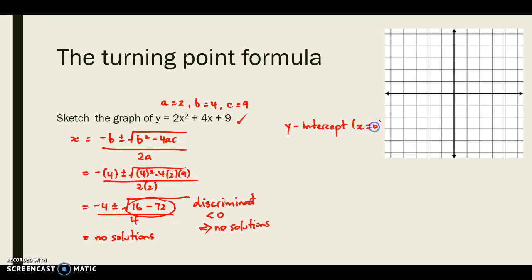Now a y-intercept occurs when x equals 0. So by substituting in 0 in the original equation, we will find that our y-intercept actually equals 9. So that can be placed as our first point on the graph.